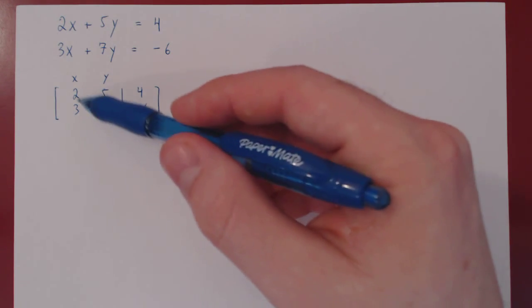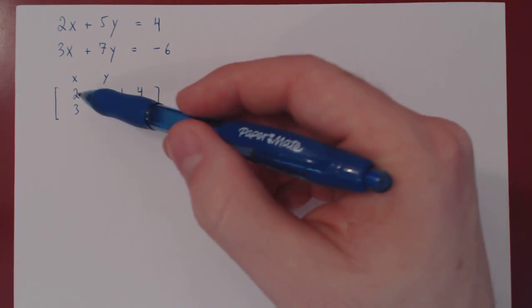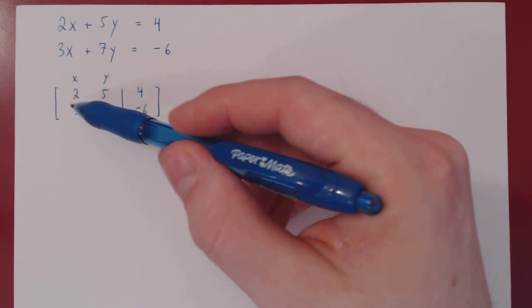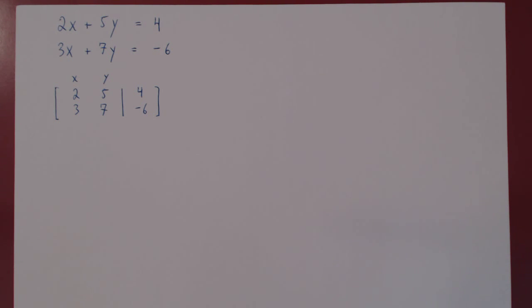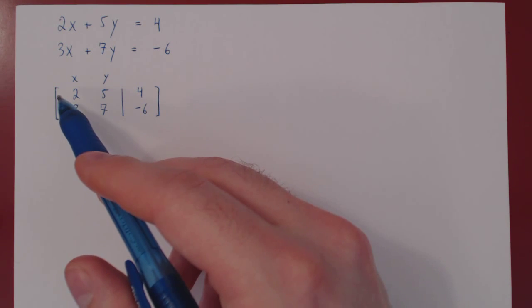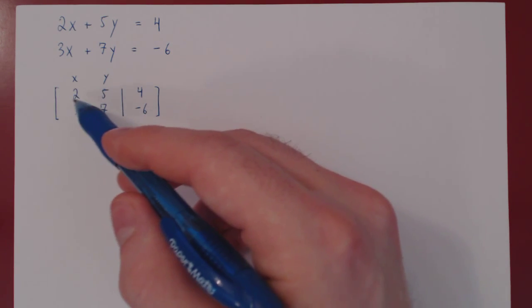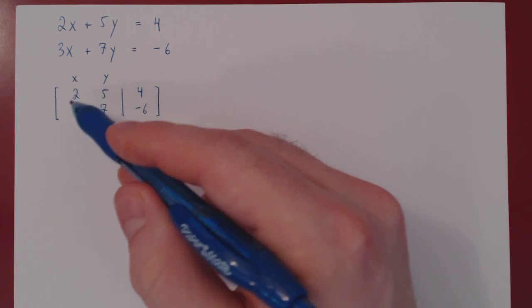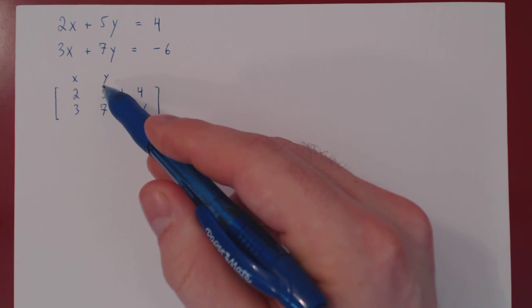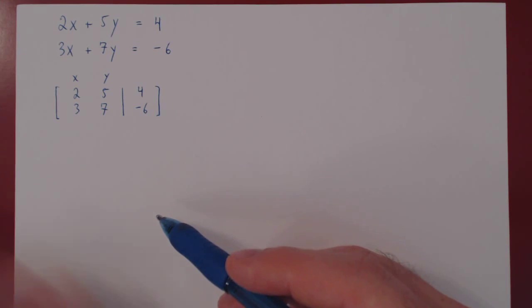Our goal is to start with the leftmost column and try to introduce a leading one in the top row, which would be here in our case. When you introduce your leading one, try as much as possible to avoid the introduction of fractions. Here it is tempting to simply multiply row one by one half to get your leading one, but this will give us a 5 over 2 here. Let's try to avoid introducing fractions.